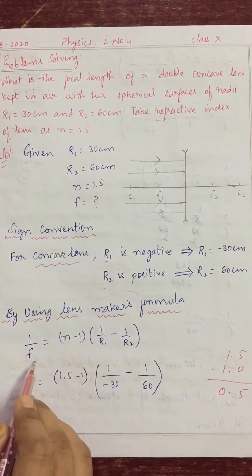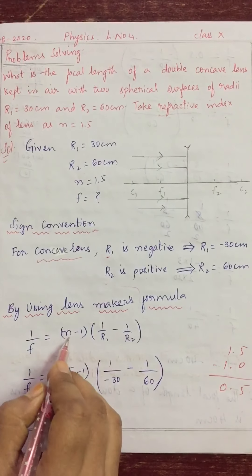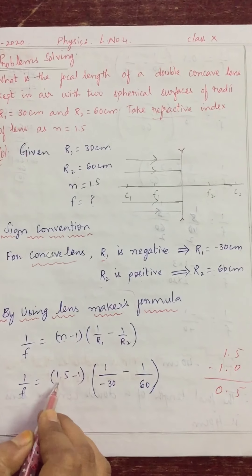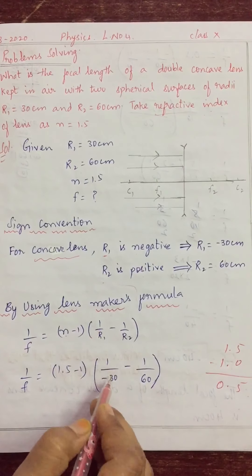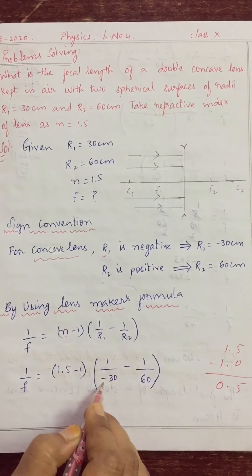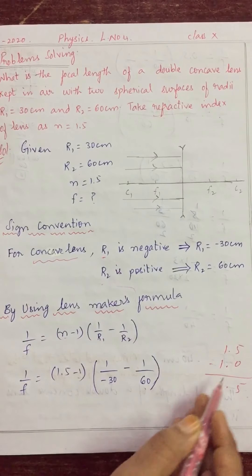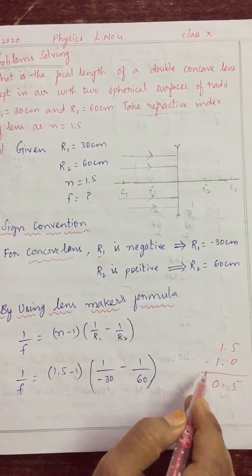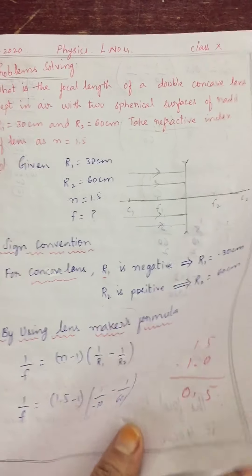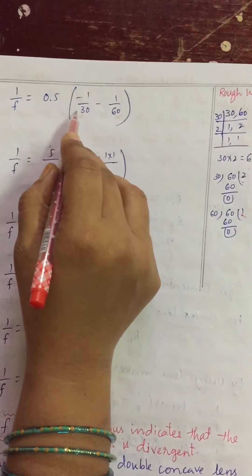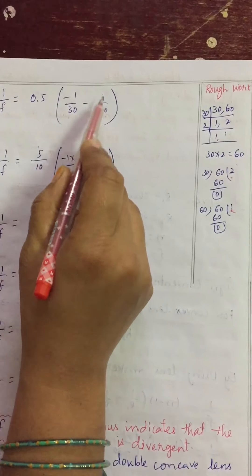Now using the lens maker formula: 1/f = (n - 1) × (1/R1 - 1/R2). Substituting: (1.5 - 1) × (1/(-30) - 1/60). That gives 0.5 × (-1/30 - 1/60).